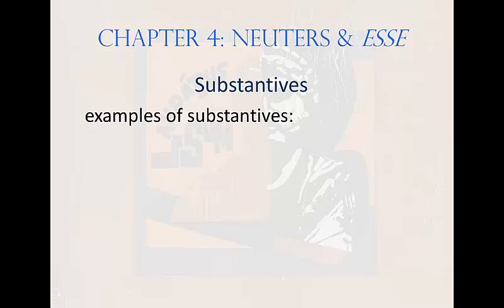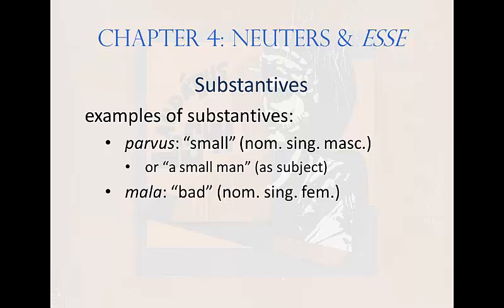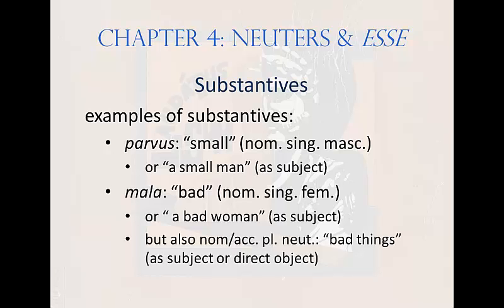Here are some examples of substantives. If you encounter parvus — meaning small, nominative singular masculine — and there's a noun like puer to attach it to, you do that: parvus puer means small boy. But if there is no noun to attach it to, the Latin text implies man, because parvus is masculine gender. Another example: mala, meaning bad, nominative singular feminine. If mala has no noun to modify, the implication is a bad woman functioning as the subject. However, the short a also allows for another possibility — mala as a neuter nominative or accusative plural, meaning bad things.